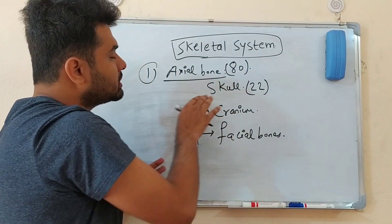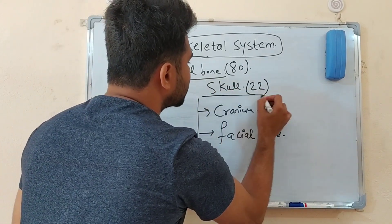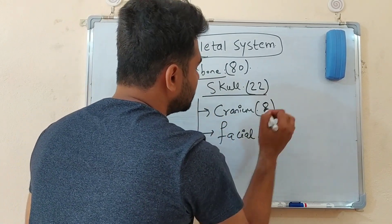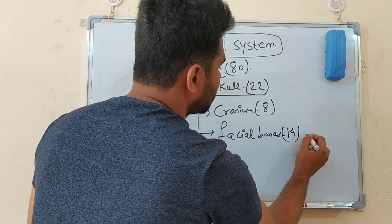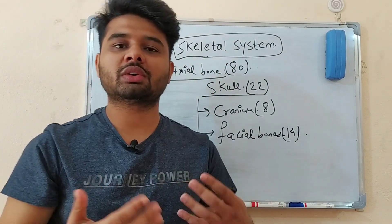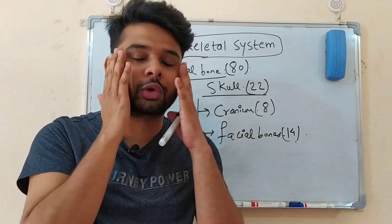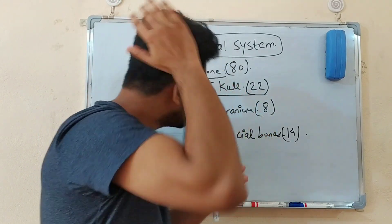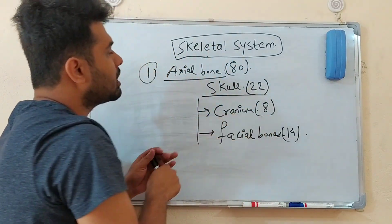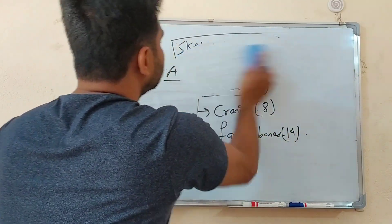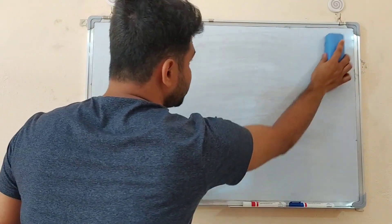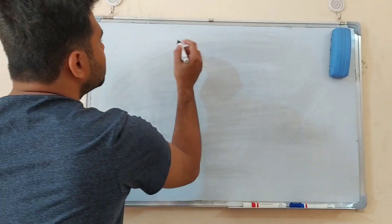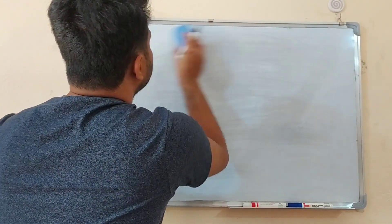Now we have the skull bone. We need to remember the cranium bones and the facial bones. We need to remember all of their names because MCQ questions are based on that. All of the cranium bones come out of the skull. Let's look at them.